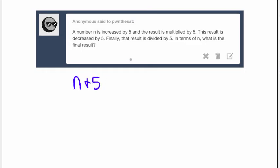And then that result is multiplied by 5. So what happens when you multiply the whole result by 5? Well, you've got to do this. So this is going to become 5n plus 25.